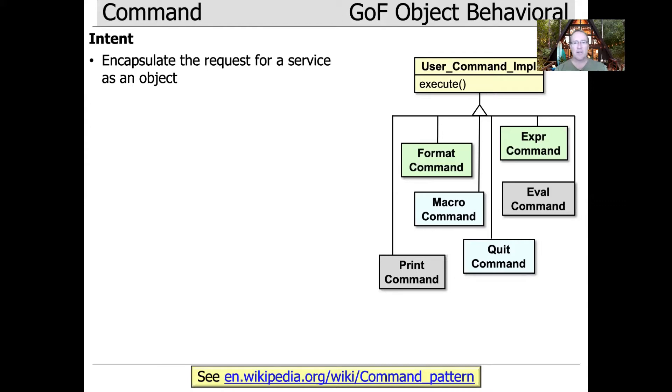The intent of this pattern is to encapsulate the request for a service as an object. You've got some service - you want to format something or print something, evaluate something - and you're going to make that request be handled as an object with a canonical method called execute to perform that command.